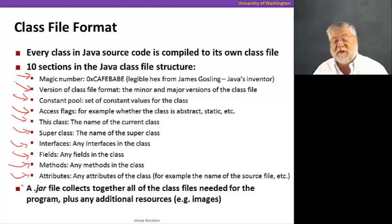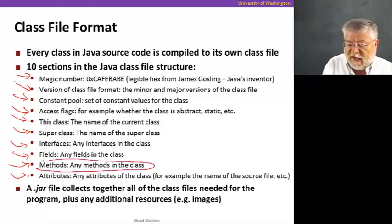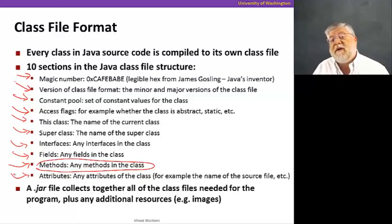Any interfaces it implements, then its fields, its methods, and its attributes. All of these are packaged together in a single file. The methods here are the ones that are going to have the bytecodes corresponding to the code for each of the methods in this class. And this is packaged up into a JAR file that collects all of the class files associated with a Java program.